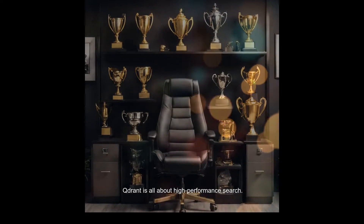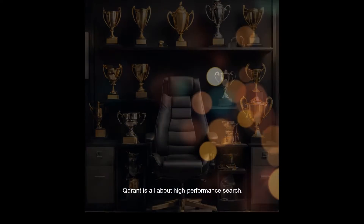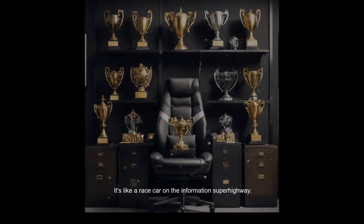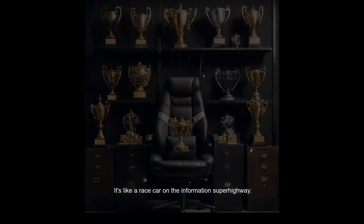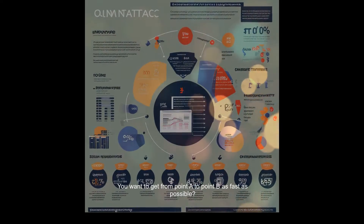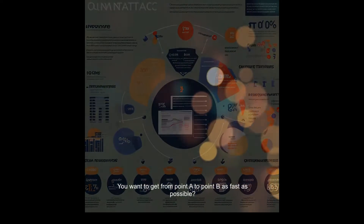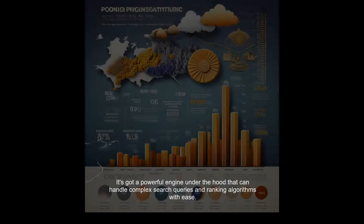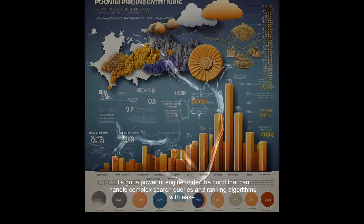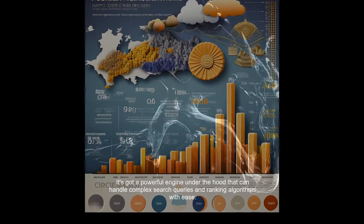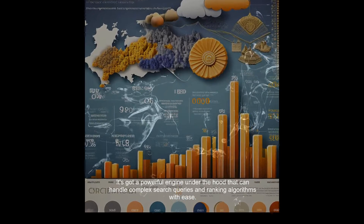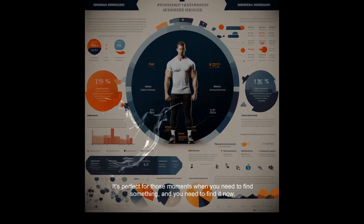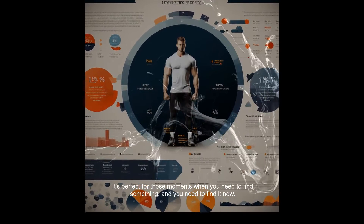Qdrant is all about high-performance search. It's like a race car on the information superhighway. You want to get from point A to point B as fast as possible? Qdrant's your ride. It's got a powerful engine under the hood that can handle complex search queries and ranking algorithms with ease. It's perfect for those moments when you need to find something, and you need to find it now.